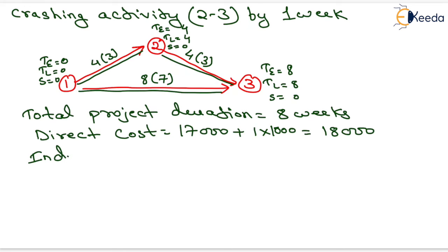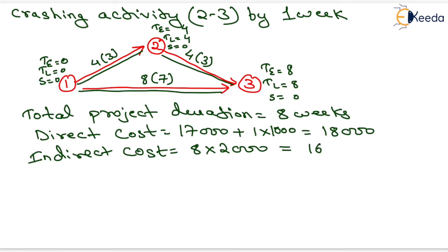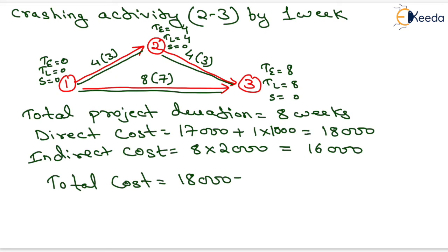Indirect cost equals 8 weeks multiplied by 2000 rupees per week, giving 16,000 rupees. Total cost equals 18,000 plus 16,000, which is 34,000 rupees.